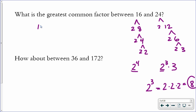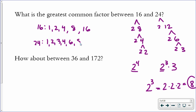I could have gotten that by listing them: 1, 2, 4, 8, and 16 for 16. For 24, there's quite a few factors: 1, 2, 3, 4, 6, 8, 12, 24. I can see now that the greatest common factor is indeed 8. Let's try it for 36 and 172 — you might want to pause and try that one on your own.